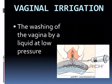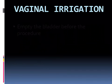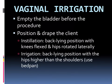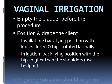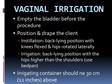Vaginal irrigation is the washing of the vagina by a liquid at low pressure — also called douche — to remove noxious substances or materials inside the vagina. Empty the bladder first before the procedure and position and drape the client. For installation, position the patient back-lying with knees flexed and hips rotated laterally. For irrigation, back-lying position with hips higher than the shoulders; use a bedpan. The irrigating container should be 30 centimeters or 12 inches above the site so that gravity provides pressure.